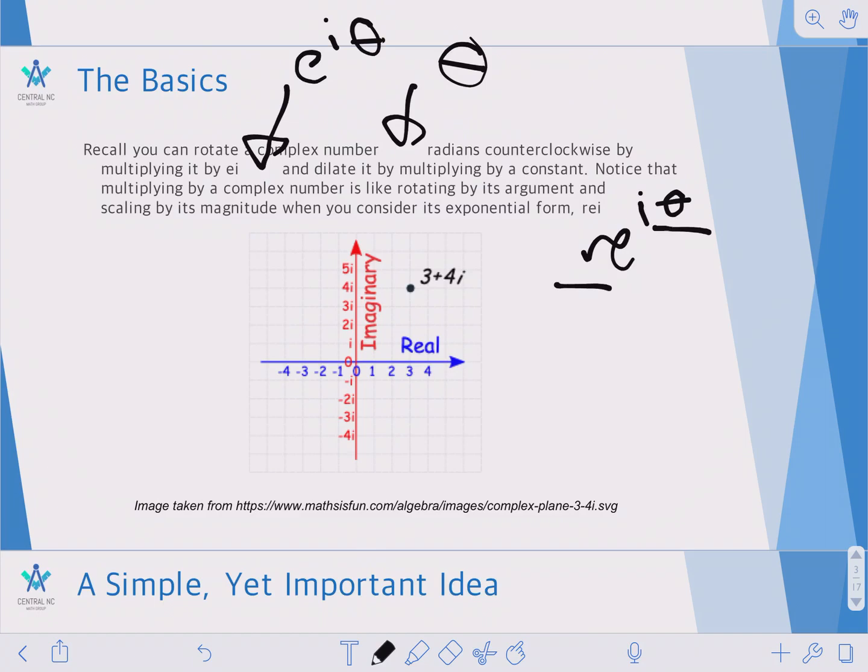Let's say you wanted to multiply 3 plus 4i by 2i. Well, you can write 2i as 2e to the i pi over 2. And since pi over 2 is 90 degrees,